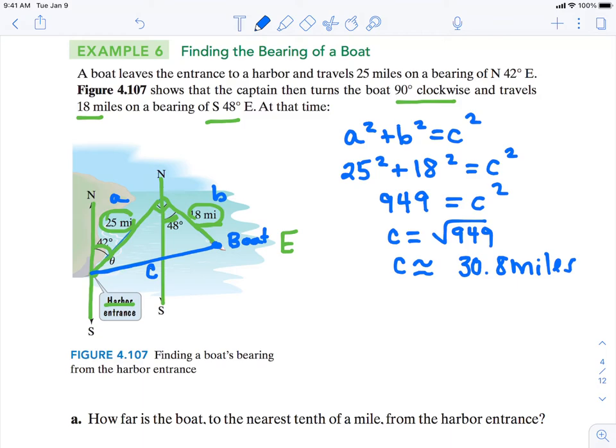So how far is the boat to the nearest tenth of a mile? About 30.8 miles. So let's go ahead and put that here. 30.8 miles.